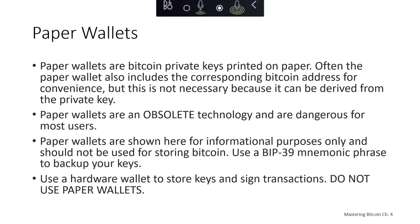Paper wallets are Bitcoin private keys printed on paper. Often the paper wallet also includes a corresponding Bitcoin address for convenience, but this is not necessary because it can be derived from the private key. However, paper wallets are an obsolete technology and they are dangerous for most users. There are many subtle pitfalls involved in generating and using paper wallets, and hundreds of Bitcoin have been stolen from paper wallets. I recommend moving Bitcoin off a paper wallet into a software or hardware wallet — hardware wallets are much more secure for storing Bitcoin and keys.